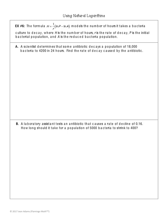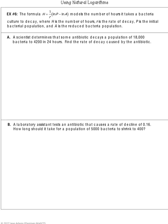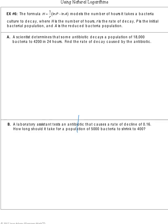Now for word problems. The given formula models the number of hours it takes a bacteria culture to decay, where H is the number of hours, R is the rate of decay, P is the initial bacterial population, and A is the reduced bacteria population. In part a, a scientist determines that an antibiotic decays a population of 18,000 bacteria to 4,200 in 24 hours. Find the rate of decay.